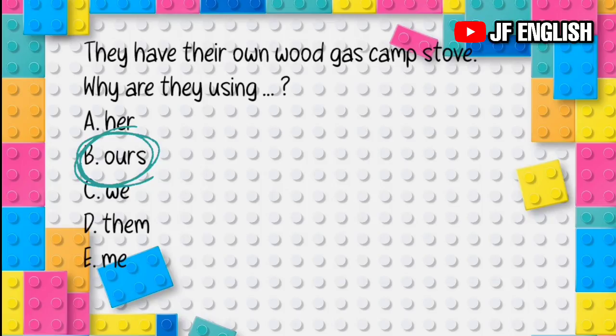Jawabannya adalah B — 'ours.' Kalimat: 'They have their own woodcast camp staff. Why are they using...?' Artinya: mereka punya kompor gas camping sendiri, kenapa mereka memakai titik-titik? Kedua kalimat membahas tentang kepunyaan. Pada kalimat kedua tidak disebutkan bendanya — ingat, apabila tidak disebutkan bendanya di belakang, maka kamu harus menggunakan possessive pronoun. Hanya B yang merupakan possessive pronoun.